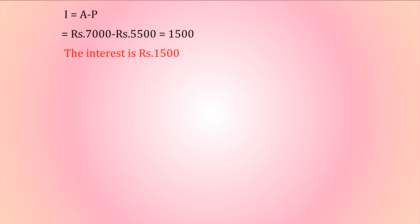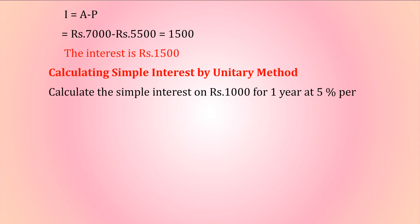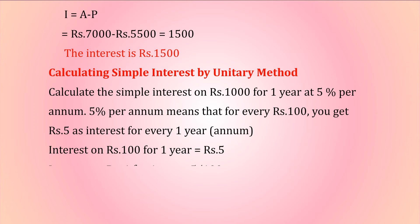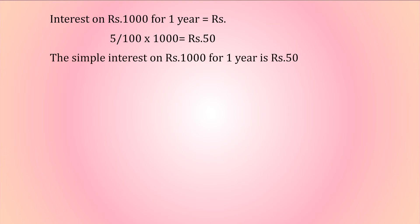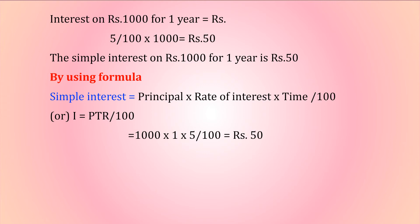Calculating simple interest by the unitary method: Calculate the simple interest on ₹1,000 for one year at 5% per annum. 5% per annum means for every ₹100 you get ₹5 as interest per year. Interest on ₹100 for one year = ₹5. Interest on ₹1 for one year = 5/100. Interest on ₹1,000 for one year = ₹5/100 × 1000 = ₹50. Using formula: S.I. = P × T × R / 100 = 1000 × 1 × 5 / 100 = ₹50.